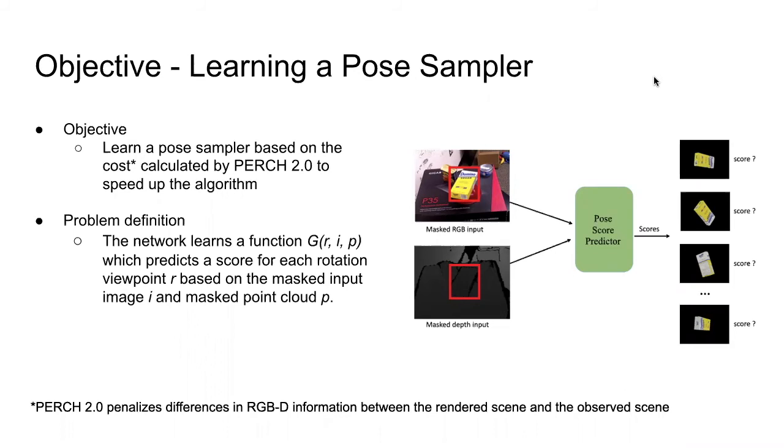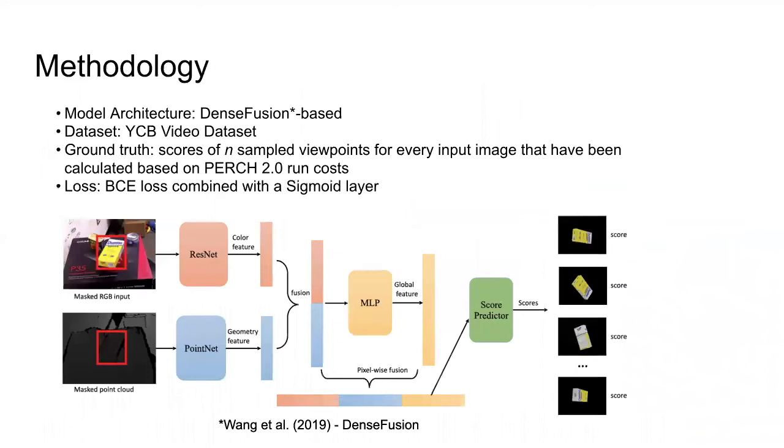We formalize the problem of learning as a task to learn a function g that predicts the score for each rotation viewpoint r based on the masked input image i and the masked point cloud p. Specifically, we are following a DenseFusion-like network to extract pixel-wise color feature and geometric embedding to estimate a score of each viewpoint.